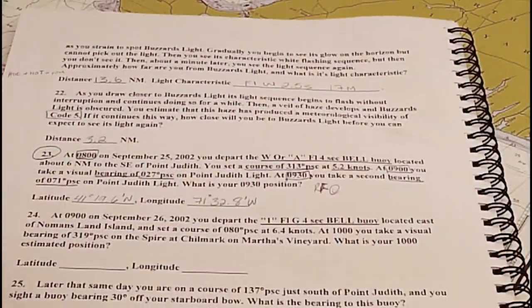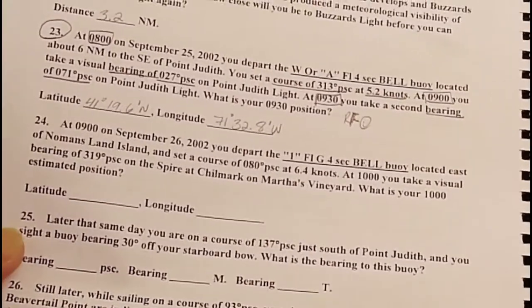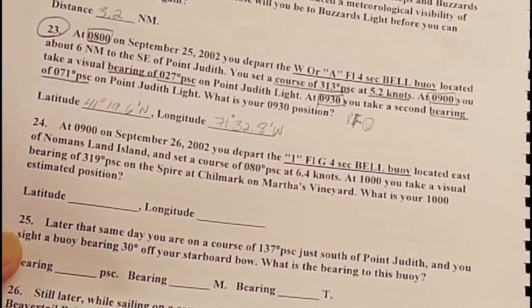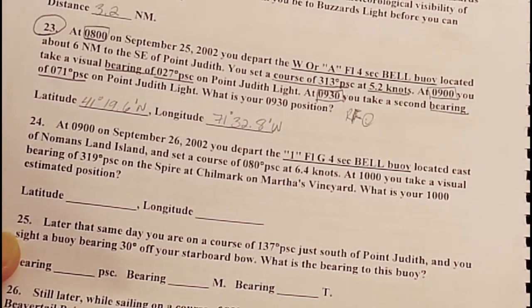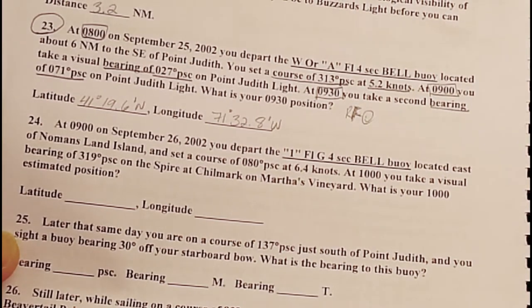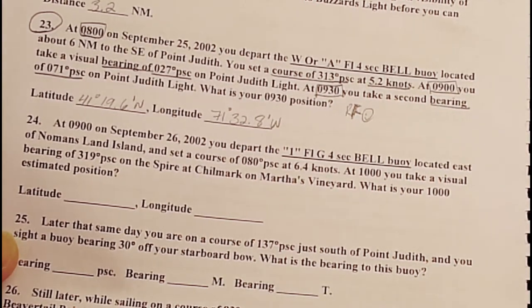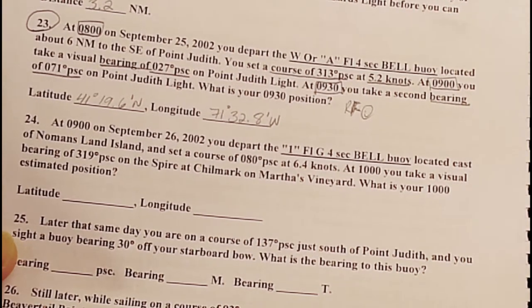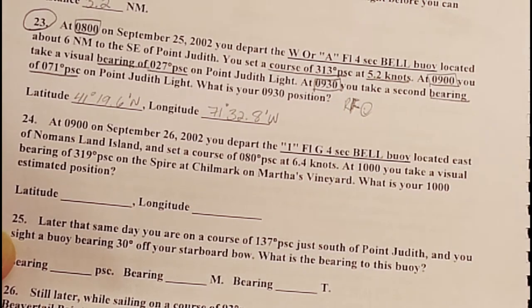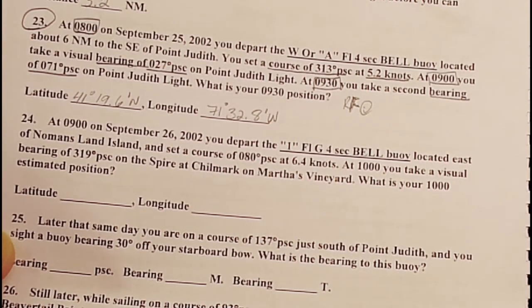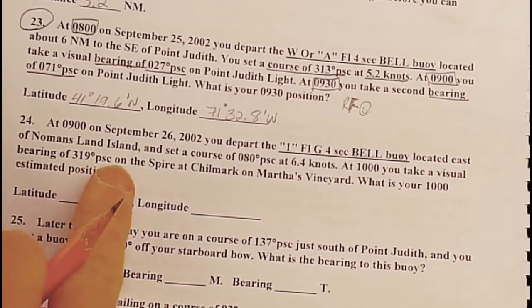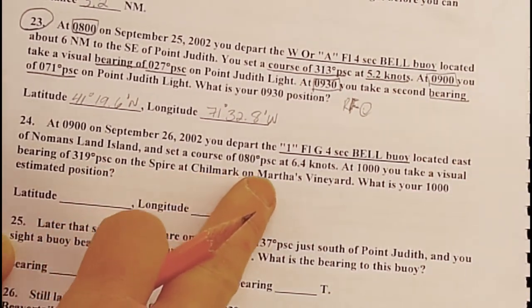So this particular exercise, this question is saying at 900 on September 26, 2002, you depart the number one flashing green four-second bell buoy located east of no man's land island, and set a course of 80 degrees per ship's compass at 6.4 knots.